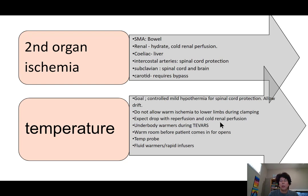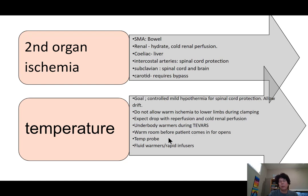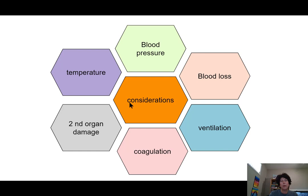How do we manage this? We have under-body warmers for our endovascular cases because both arms are tucked and upper-body warmers don't work as well. For opens, we will warm the room before the patient comes in and try to manage the temperature before clamping so that we don't get severe hypothermia. We will have temperature probes, fluid warmers, and rapid infusers. Those are our considerations for our thoracic cases.